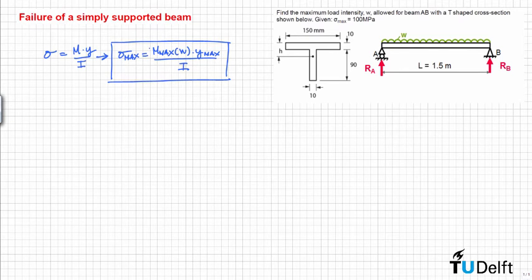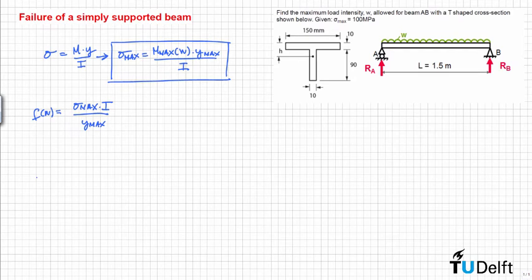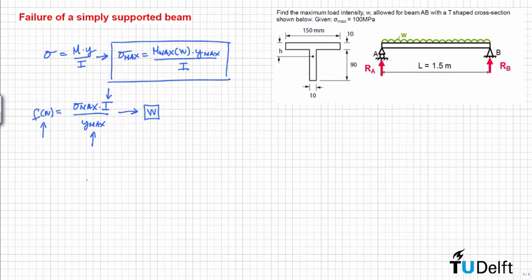From this equation, we want to calculate the load intensity W. Basically, the maximum moment is a function of the load intensity, so M_max equals sigma_max times the moment of inertia divided by Y_max. We need to calculate Y_max, the moment of inertia of the section, and this function of W. Once we know all that, we can solve for W. Let's start by calculating the moment of inertia, then Y_max, and finally the moment distribution for beam AB.